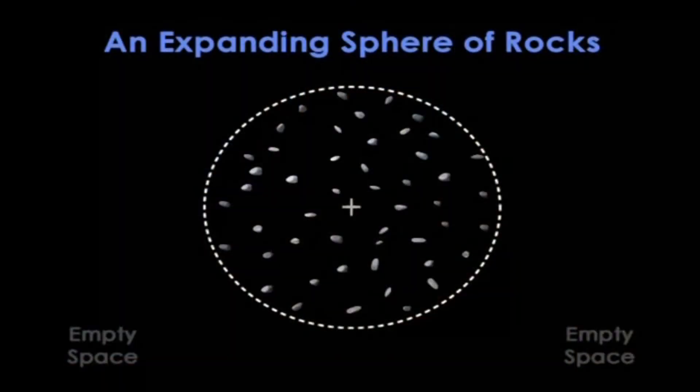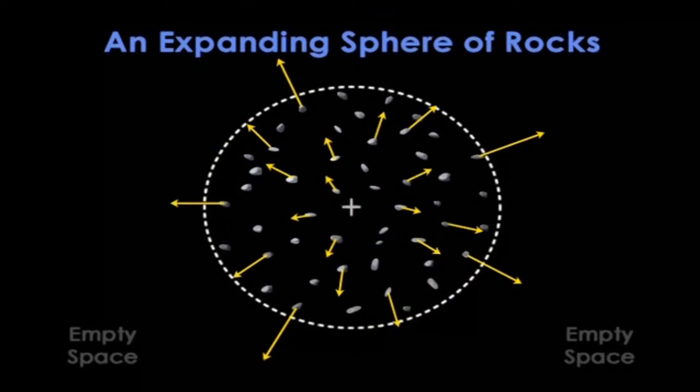So here's our toy model. Way out, far from anywhere, imagine we have a sphere containing rocks uniformly spread about. Let's also carefully arrange for these rocks to be moving away from the center with a speed that is proportional to their distance from the center, like these little arrows.